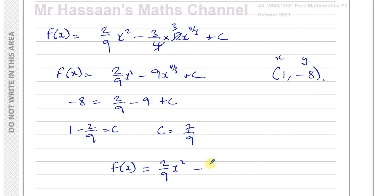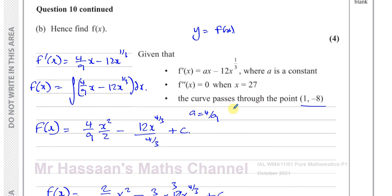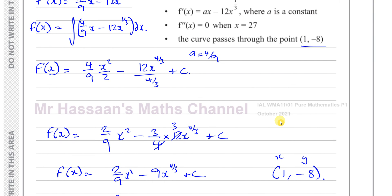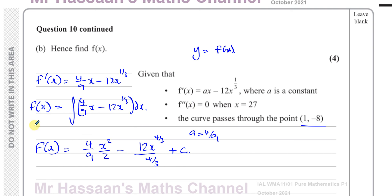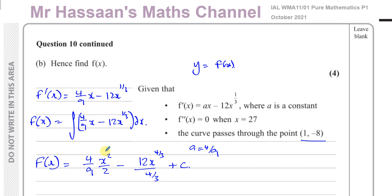Therefore f(x) equals 2 over 9 x squared minus 9x to the power 4 over 3 plus 7 over 9. We've found f(x) including the value of c, which is required when finding f(x) given a point on the curve. That completes this question and the full P1 October 2021 paper. Other questions from this paper can be found in the playlist, as well as playlists on integration and differentiation.